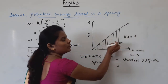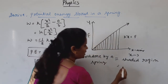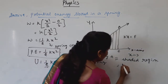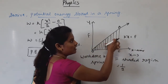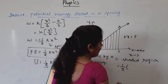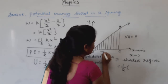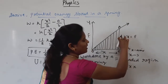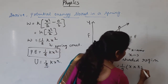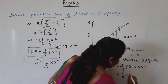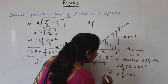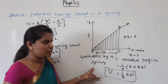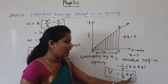The shaded region looks like a triangle with vertices at points A, O, and C. The total area of this triangle is half times base times height, where base is X and height is F, which equals KX. Therefore, area equals half KX squared, which is the potential energy U. By the graphical method also, we confirm that U equals half KX squared — the expression for potential energy stored in a spring.